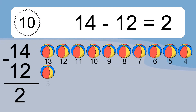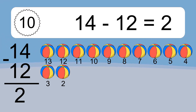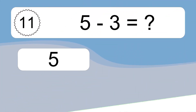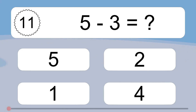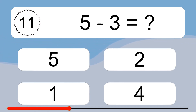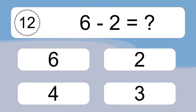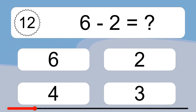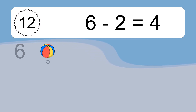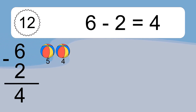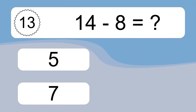10 minus 3 equals 7. Let's count it: 9, 8, 7. 14 minus 12 equals what? 14 minus 12 equals 2. Let's count it: 13, 12, 11, 10, 9, 8, 7, 6, 5, 4, 3, 2. 5 minus 3 equals what? 5 minus 3 equals 2. Let's count it: 4, 3, 2. 6 minus 2 equals what? 6 minus 2 equals 4. Let's count it: 5, 4.